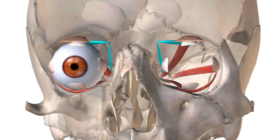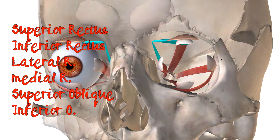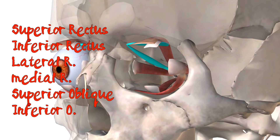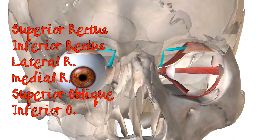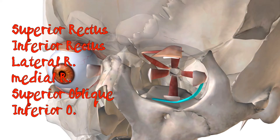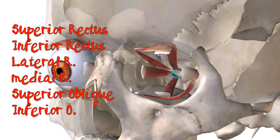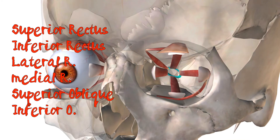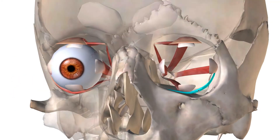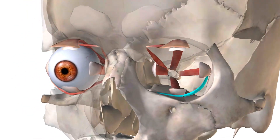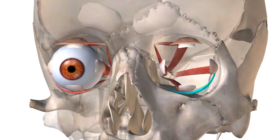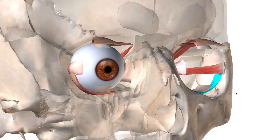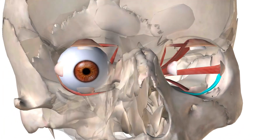That does it for all the muscles in the eye. Keep in mind that the only muscle not connected to your annulus of Zinn is your inferior oblique. All the other ones have pretty much the same point of origin. Well, I hope this video helped — good luck in your studying.